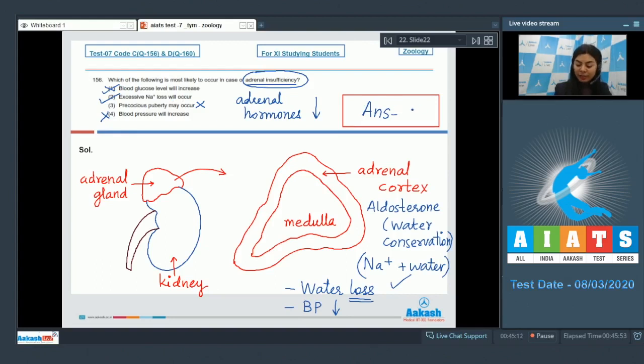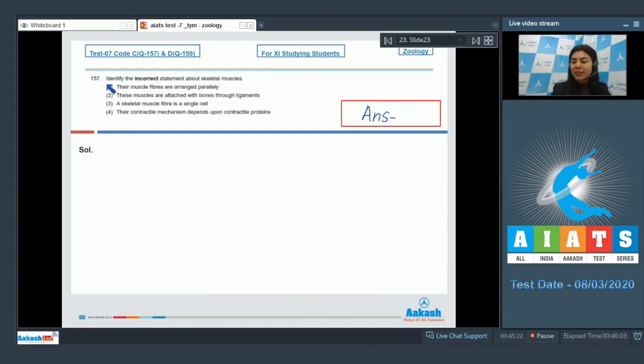Thus in case of adrenal insufficiency, option two, that is excessive sodium loss will occur, would be a correct fit. The correct answer is option two. Question 157: Identify the incorrect statement about skeletal muscles. Their muscle fibers are arranged parallelly. These muscles are attached with bones through ligaments. A skeletal muscle fiber is a single cell. Their contractile mechanism depends upon contractile proteins.